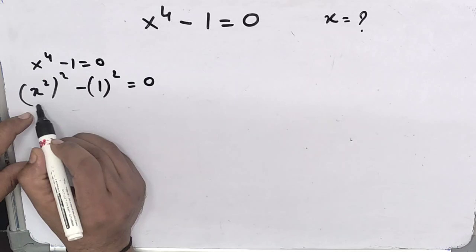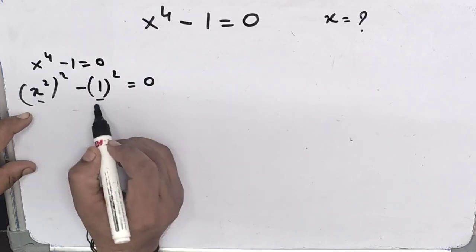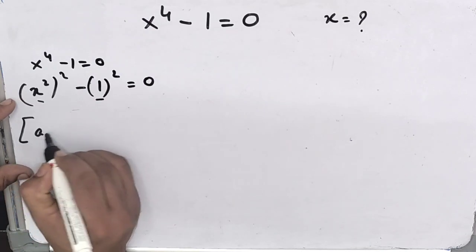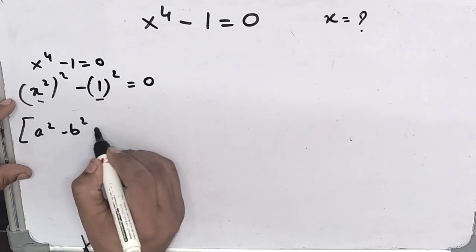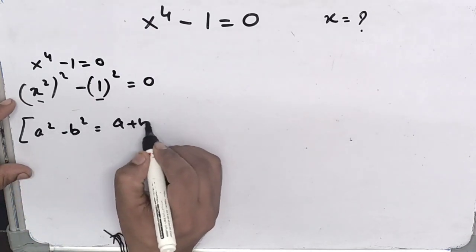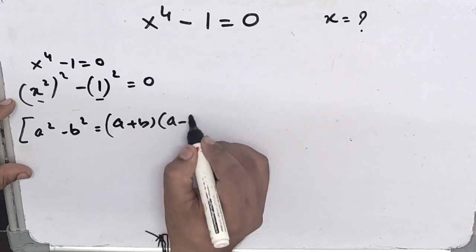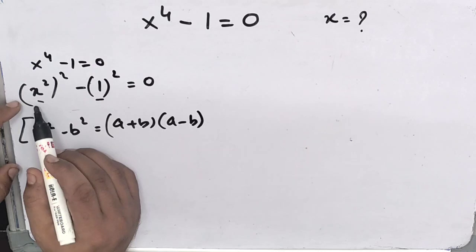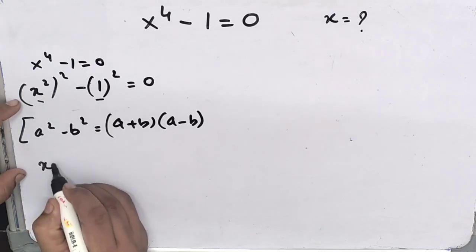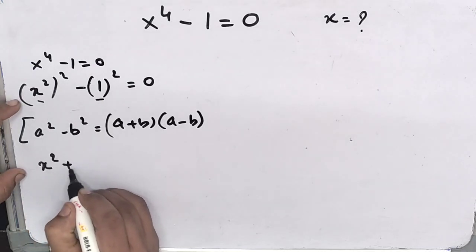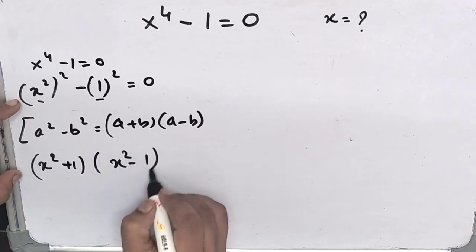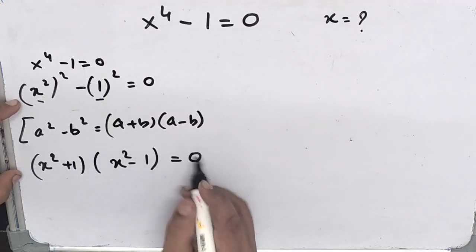Now this is in the form of a square minus b square, that is (a+b)(a-b). So this is x square plus 1, x square minus 1 equals to 0.